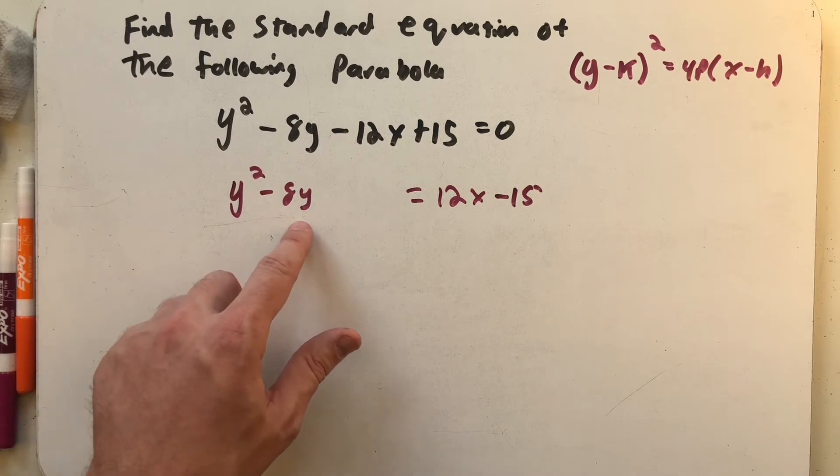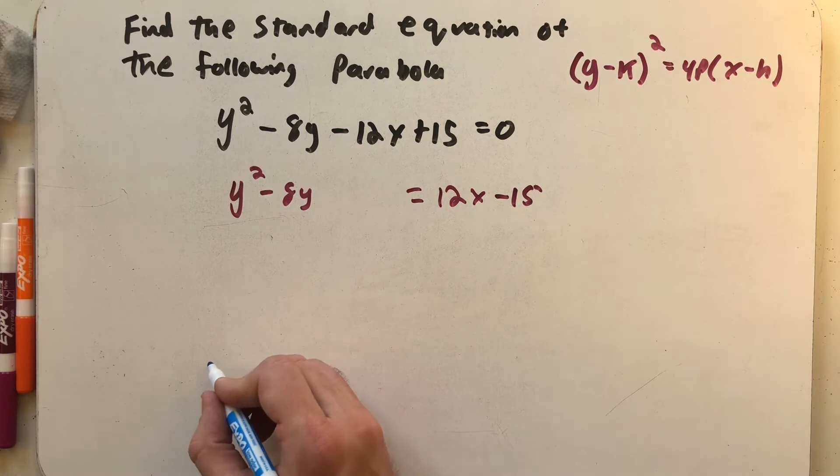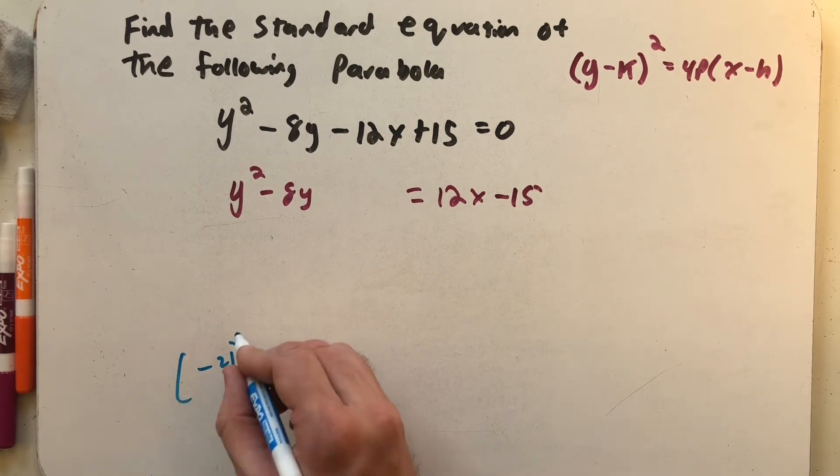1 times y² minus 8 times y. And I divide that middle term by 2. Minus 8 divided by 2 is minus 4. And I square that number.